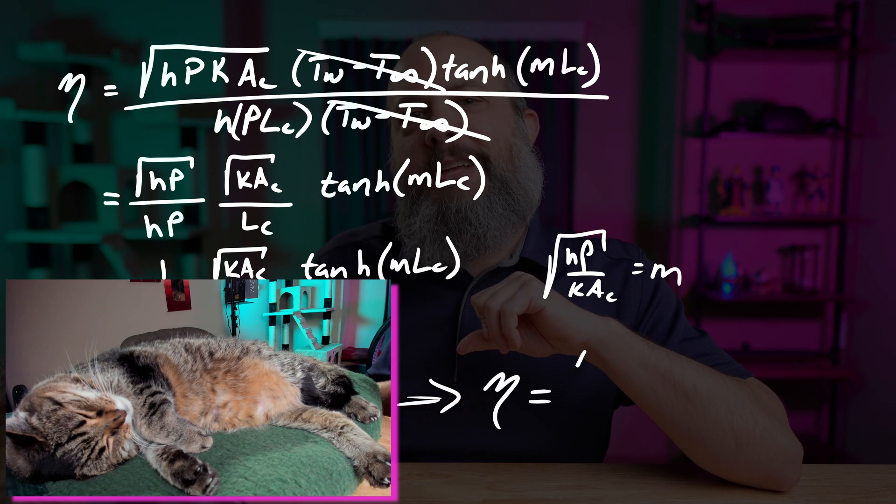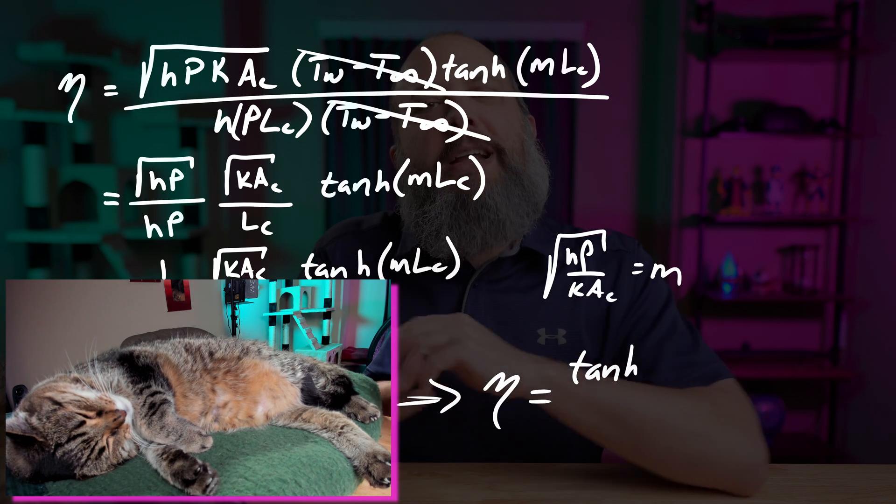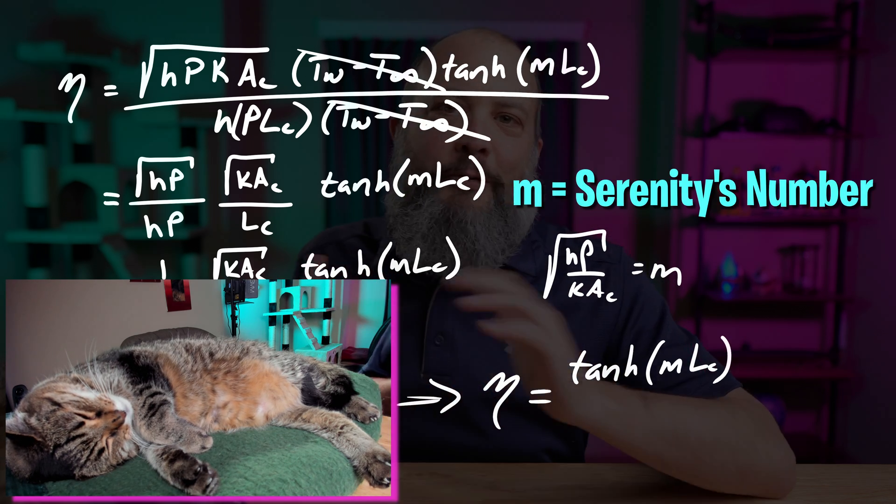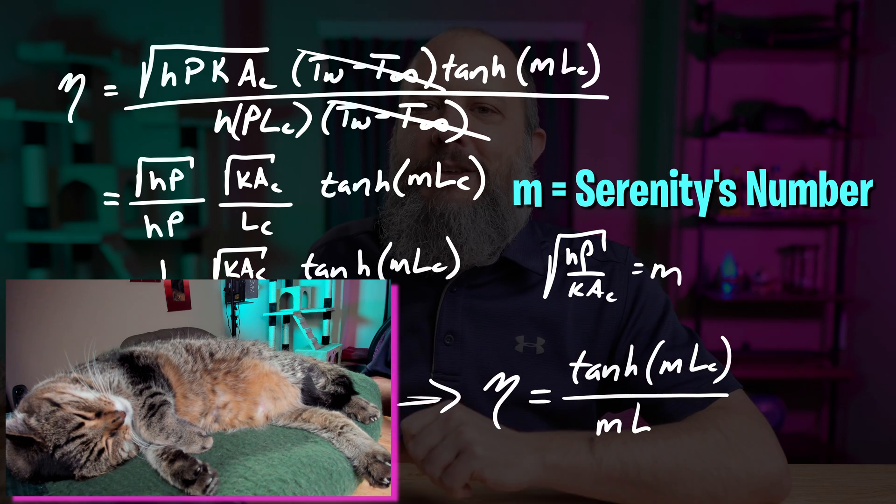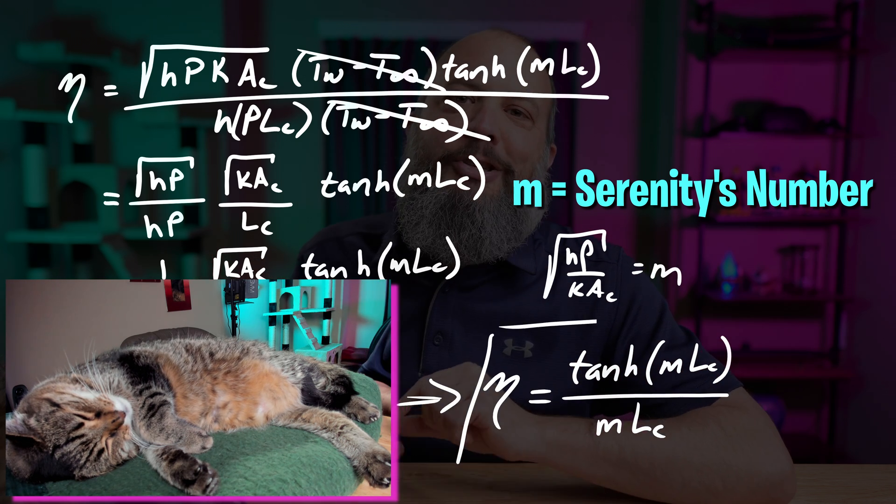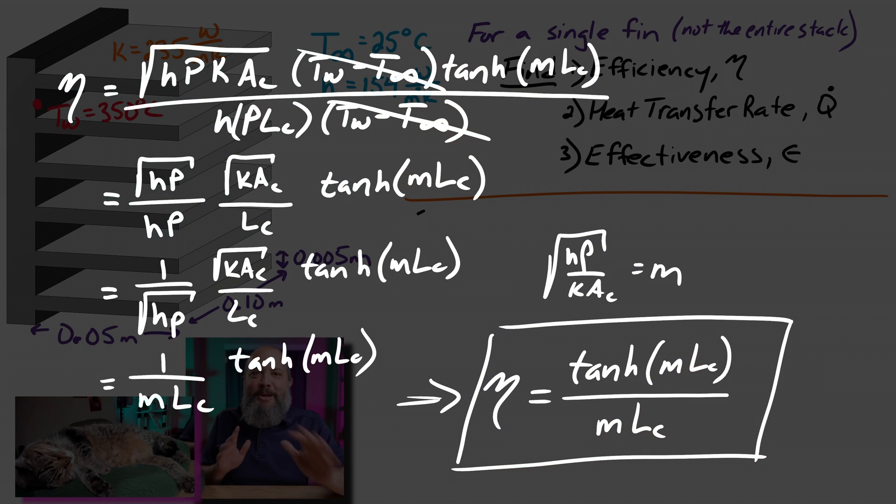And so your sleeping TA Serenity has always wanted to have something named after her. So for the rest of this video, just for fun, I'm going to call this value M your TA Serenity's M. This is Serenity's number. And I think you're going to love your TA Serenity's M because it totally simplifies this equation.